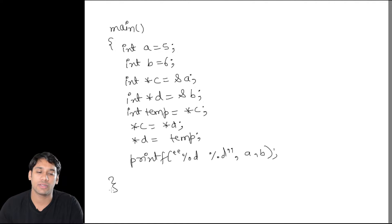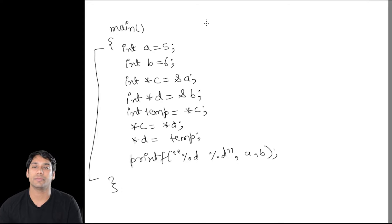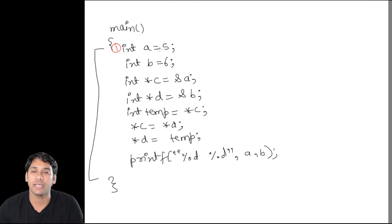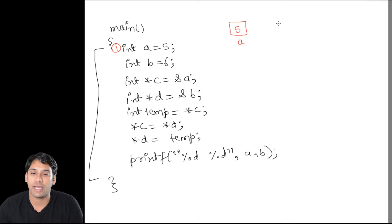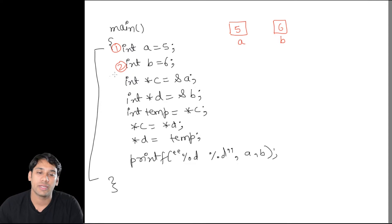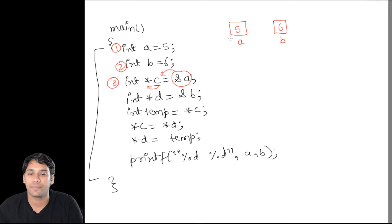Let's walk through this program. In line 1, a is an integer number storing the value 5. In line 2, b is an integer number storing the value 6. In line 3, c is declared as a pointer storing the address of variable a. Let's suppose the address of variable a is 1000 and the address of variable b is 2000.